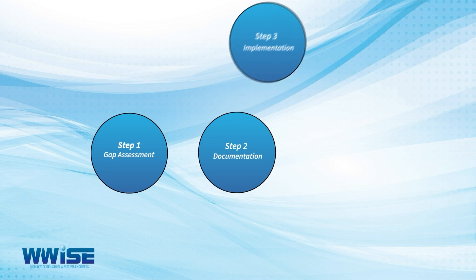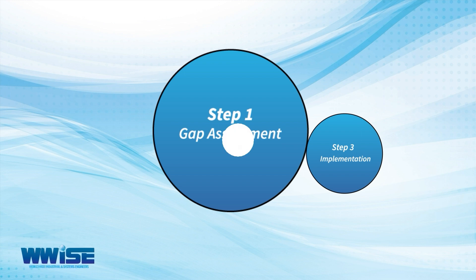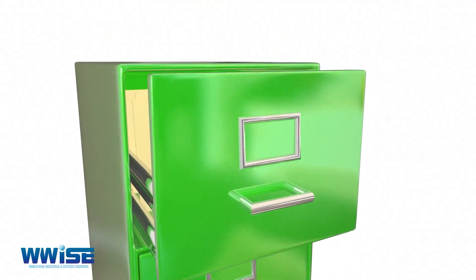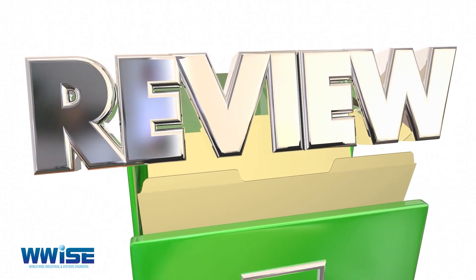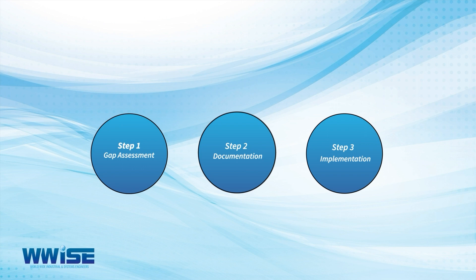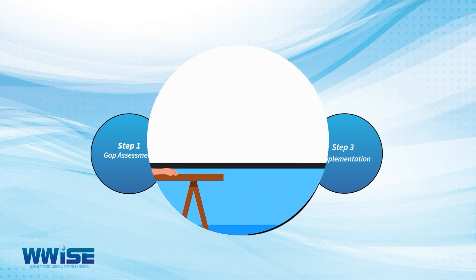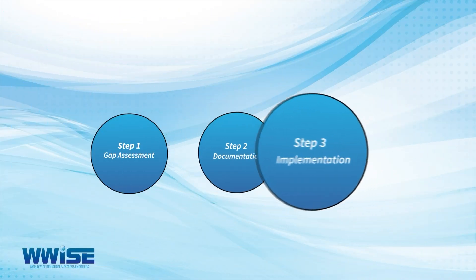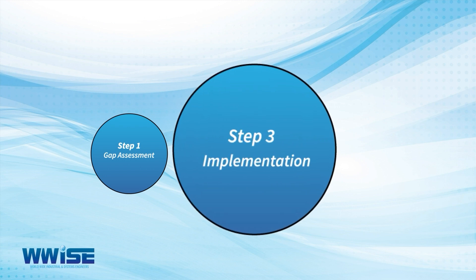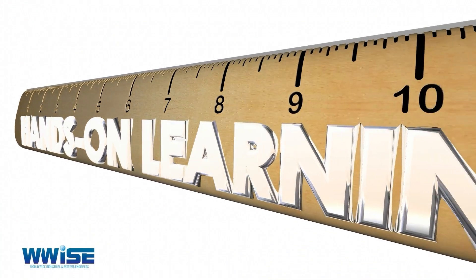Our project plan includes the following steps. Step 1: Gap Assessment — we review existing documentation and records, map it to the ISO standard's requirements and scope the amount of work required to conform. Step 2: Documentation — we develop your ISO system and documentation and conduct awareness training for all staff. Step 3: Implementation — we help you to generate records and conduct various training interventions to ensure an adequate level of skills transfer.